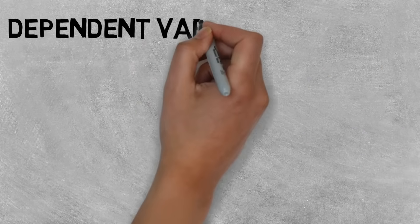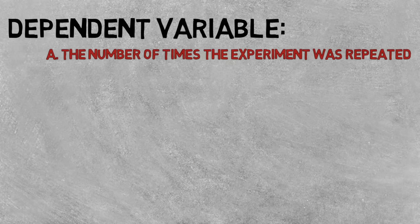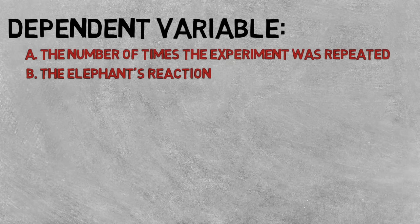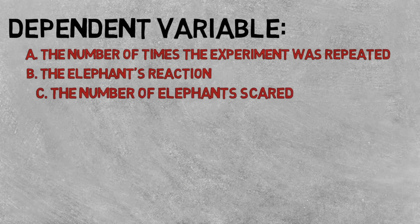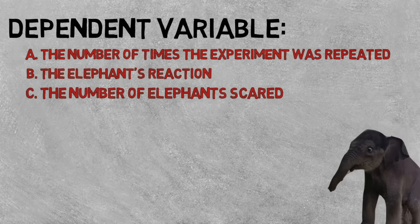What about this experiment's dependent variable? Was it the number of times the experiment was repeated, the elephant's reaction during the experiment, or the number of elephants scared by the mice?